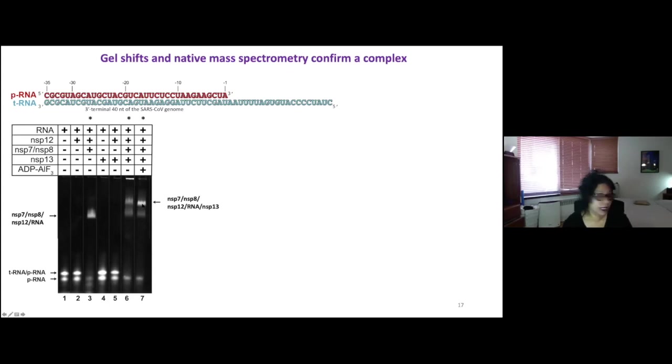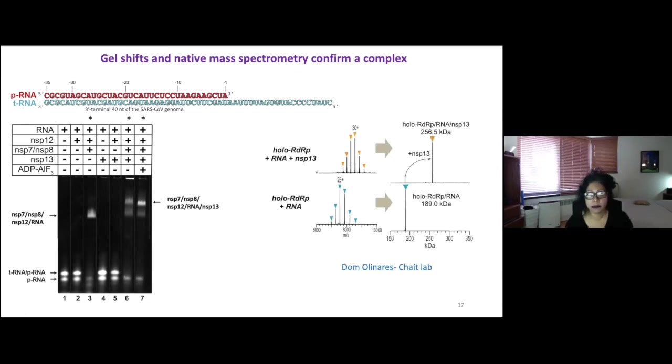And then when she added the ATP analog, ATP aluminum fluoride, she saw that the band intensified, which for structural biologists is a really good thing because it means that perhaps there's less motion, the complex is more stable. So we're going to proceed with studies with ADP aluminum fluoride.